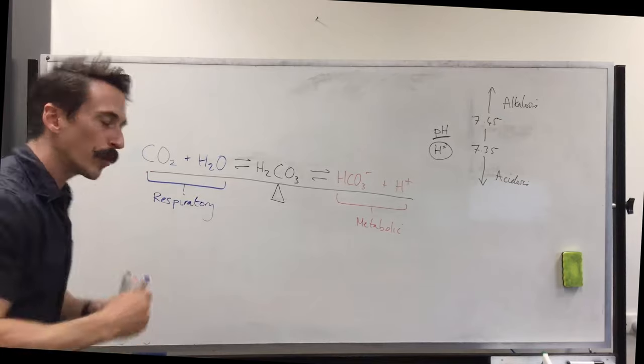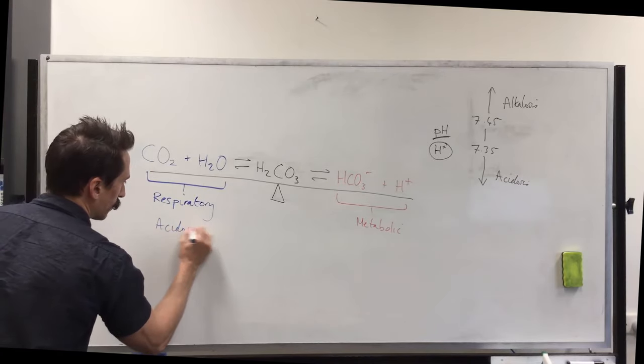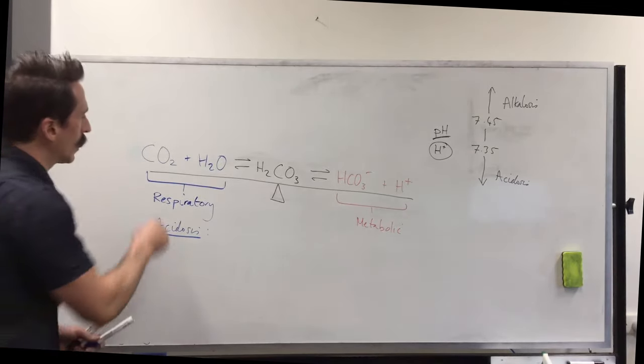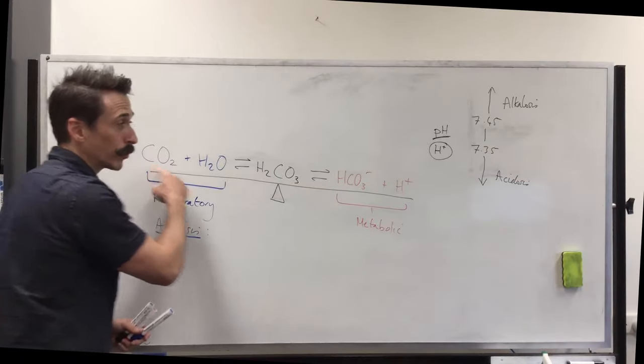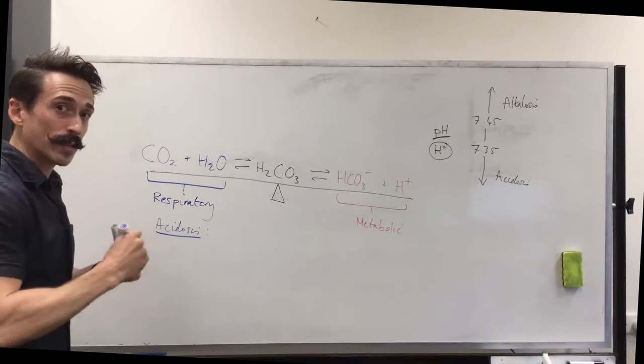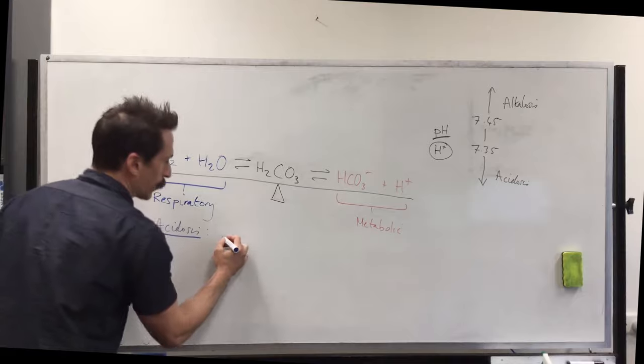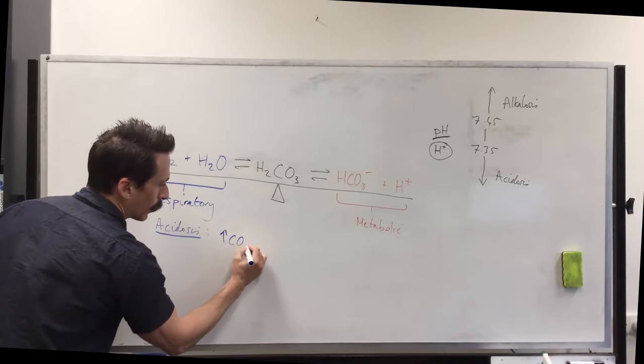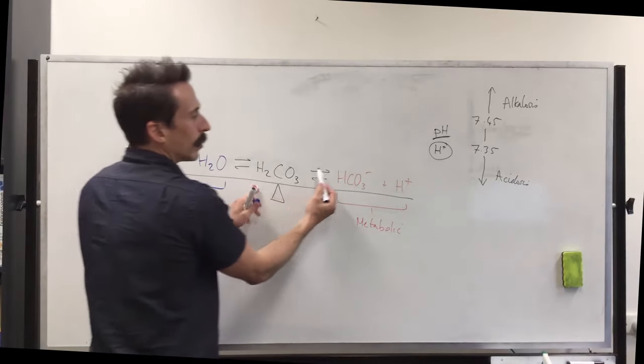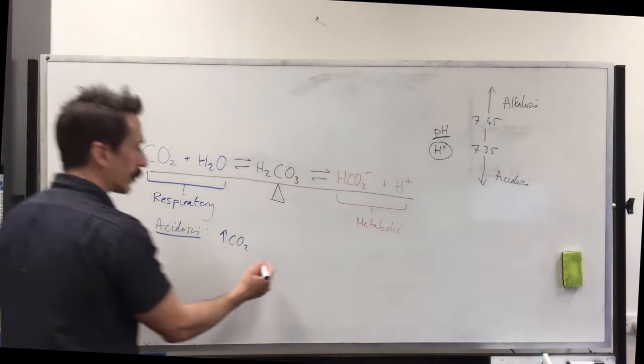Now, when somebody has respiratory acidosis, what happens is it's respiratory-based, something to do with breathing. Carbon dioxide is the only thing here that we truly breathe. We do breathe out a little bit of water, but mainly carbon dioxide. So if somebody has respiratory acidosis, the carbon dioxide levels must be increasing. Respiratory acidosis, increase carbon dioxide because this means it bonds with the water, produces carbonic acid, splits apart and produces hydrogen ions. This is acidic. That's respiratory acidosis.